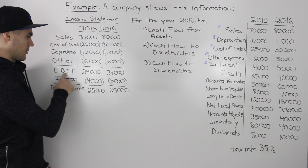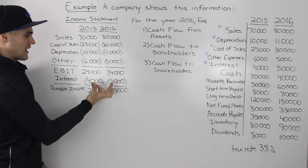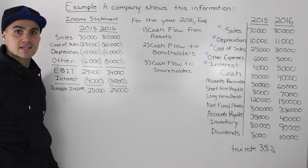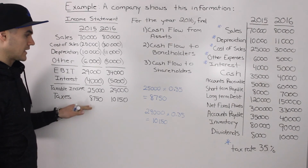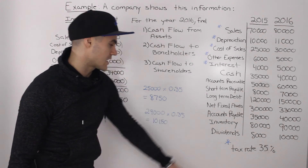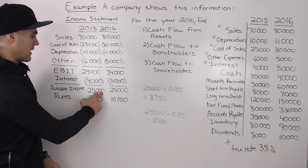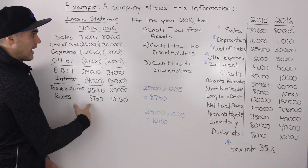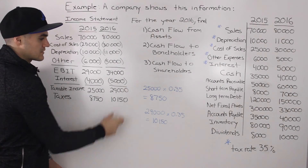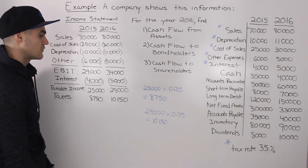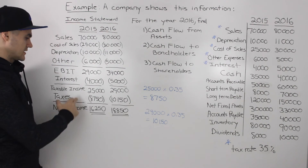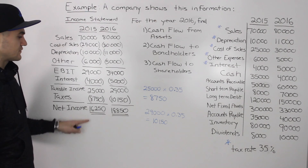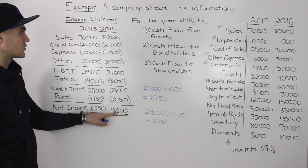Next, we subtract interest from earnings before interest and taxes — $4,000 and $5,000 respectively — to get to our taxable income of $25,000 for 2015 and $29,000 for 2016. Next is taxes. We take our tax rate of 35%, convert it to decimal form, and multiply by taxable income. So in 2015, $25,000 times 0.35 gives us $8,750. In 2016, $29,000 times 0.35 gives us $10,150. Subtracting taxes from taxable income, we get net income of $16,250 for 2015 and $18,850 for 2016.